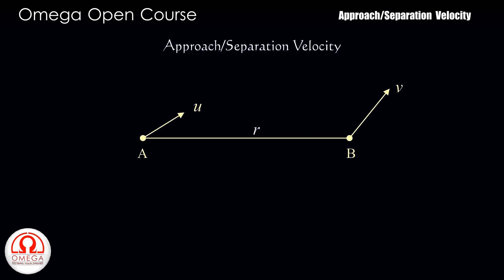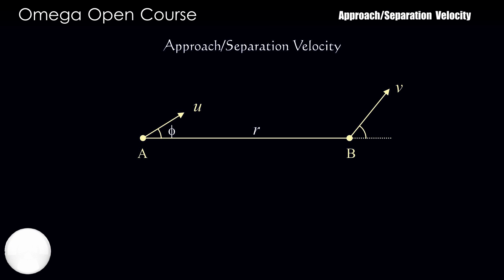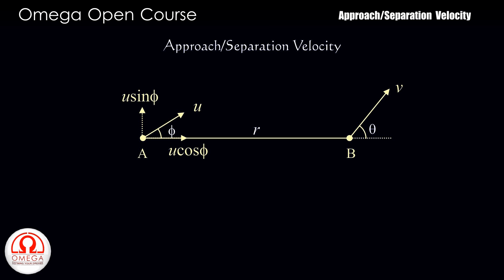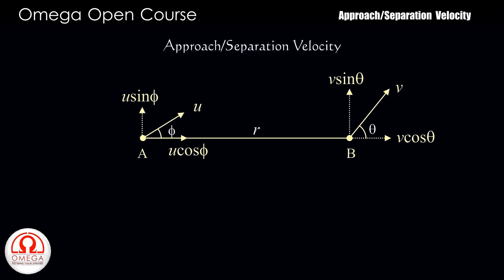Now suppose both particles are moving: A with velocity U at an angle phi from the line joining A and B, while B moves at an angle theta. The radial component of A is U cos phi and the tangential component is U sin phi. Similarly for B, its radial component is V cos theta and its tangential component is V sin theta.